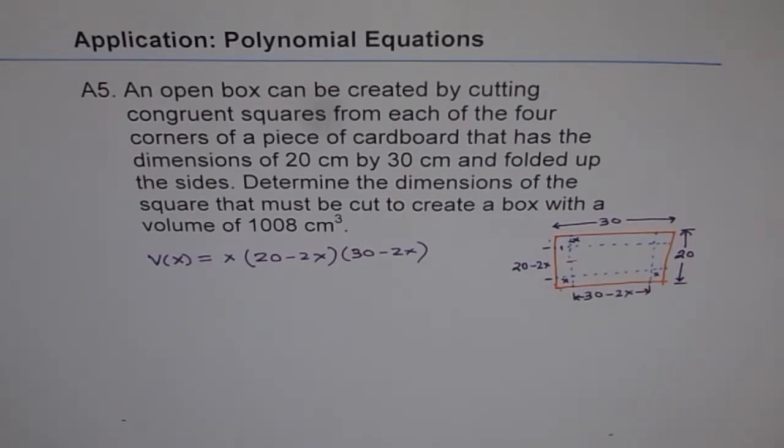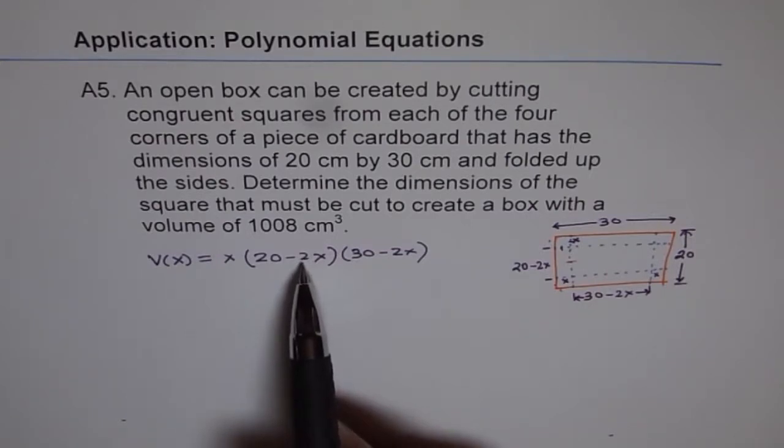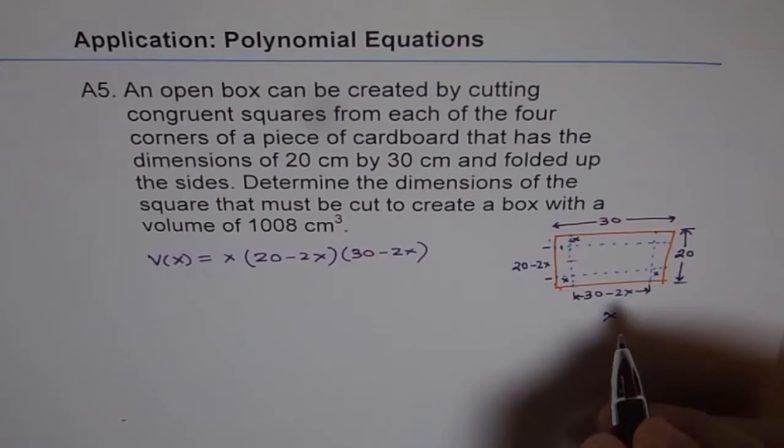Second way of looking into it is these are dimensions and they have to be positive. Correct. So none of these factors can be negative. Is that okay? So if you see that, then x cannot be negative of course, and here it says x can maximum be 10.